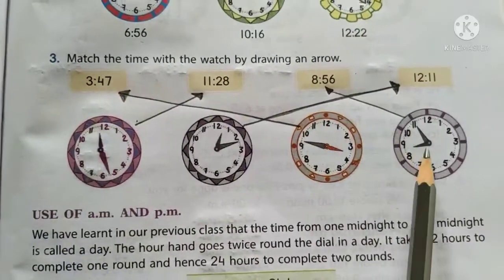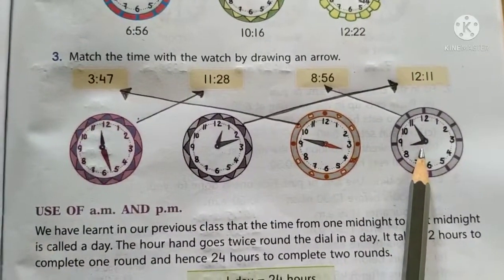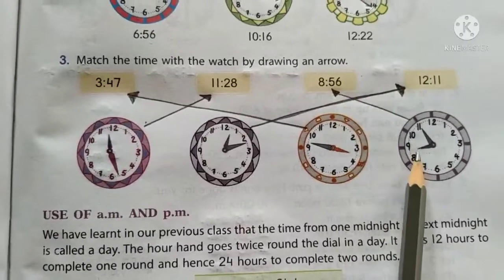The third clock is showing the time 3, 47. And the fourth and the last clock is showing the time 8, 56.